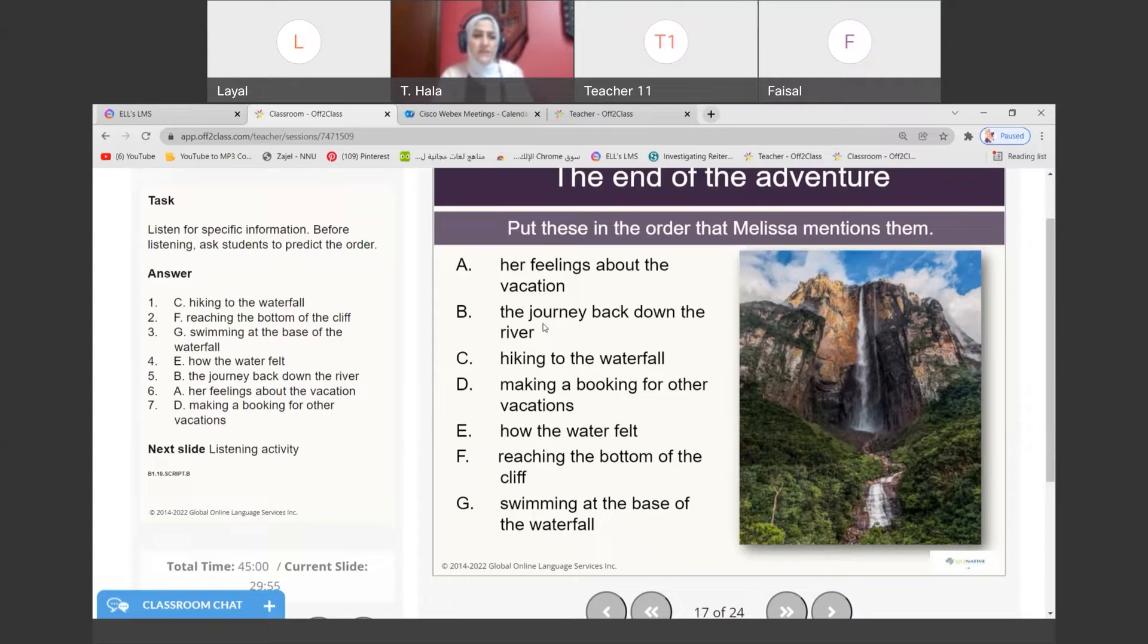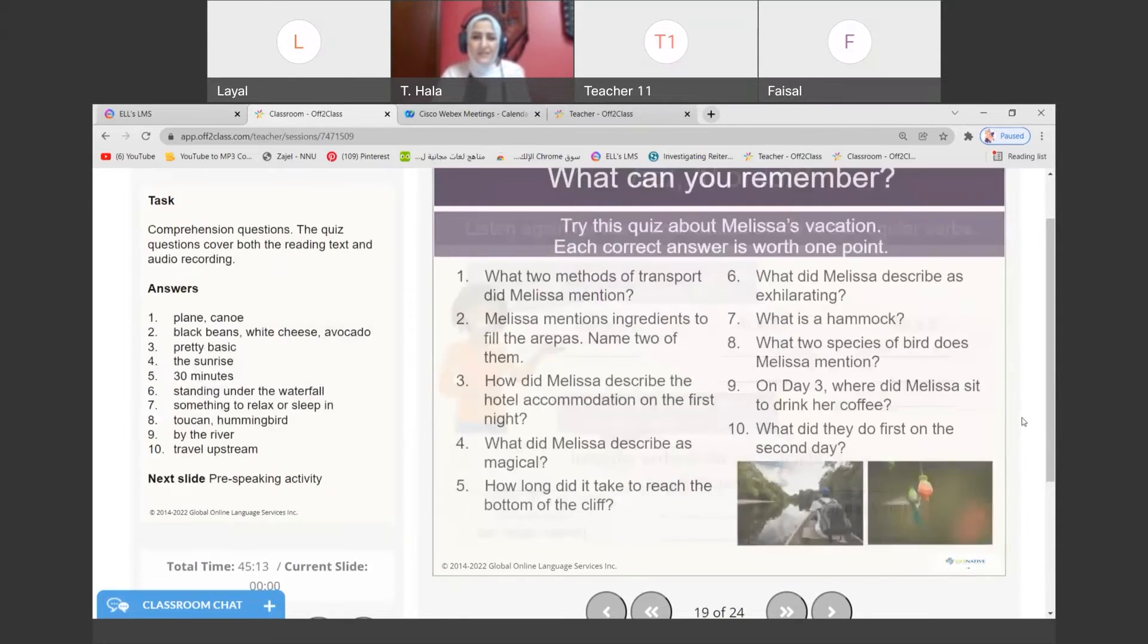After they swam and finished, they want to go home. B - the journey back down the river. Now she's talking about how her feelings about the trip were. A - her feelings about the vacation. And what she decided to do: D - making a booking for other vacations.